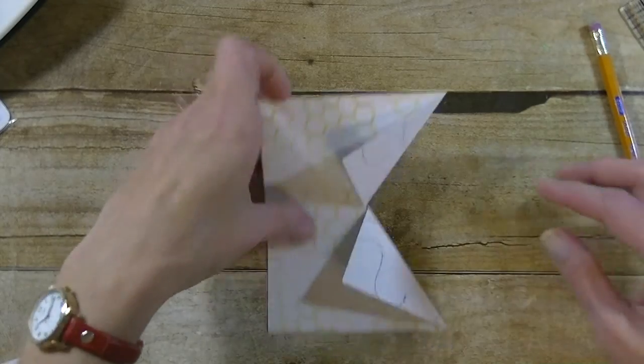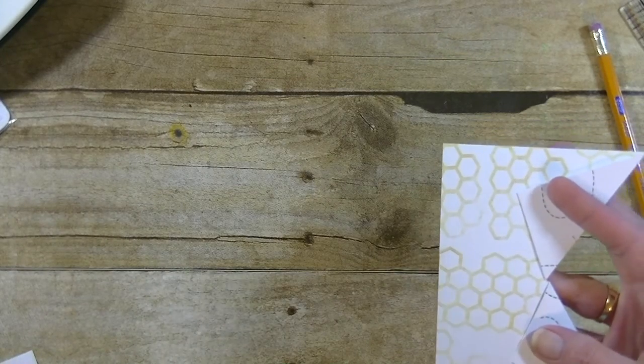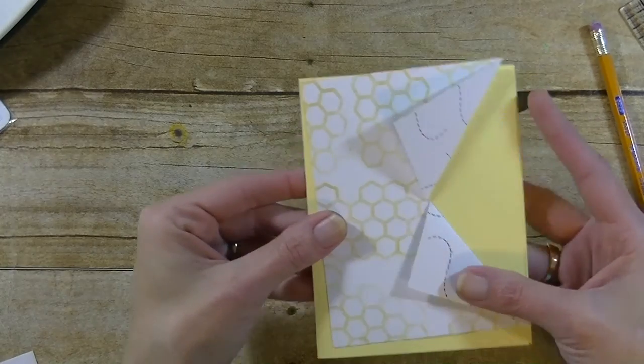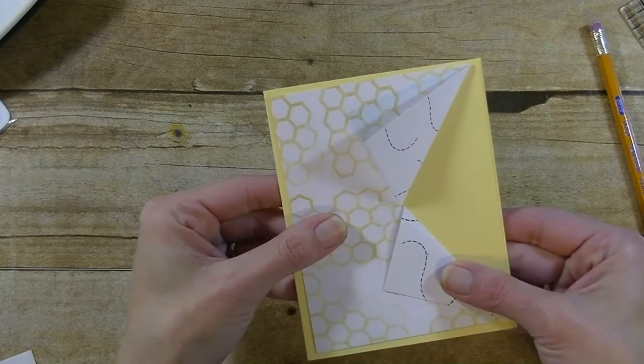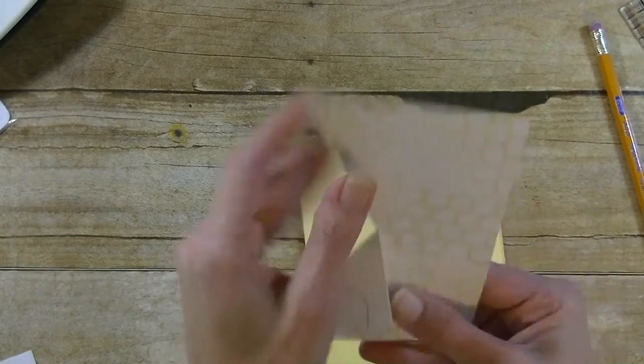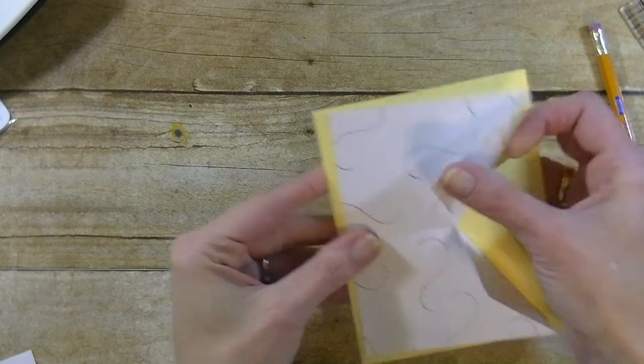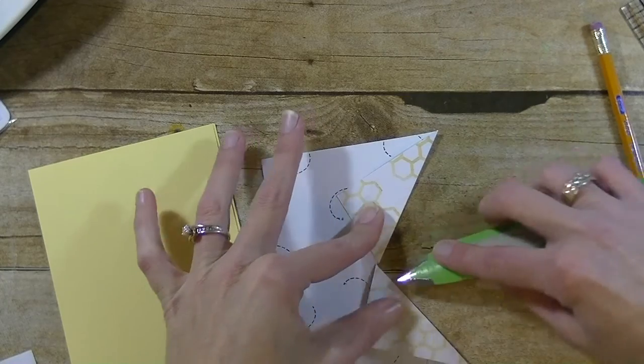I'm going to take them and fold them. Crease them with your bone folder. Now at this point, you determine what side you want to be the front of the card. Okay, I'm going to bring in our yellow background so you can see this better. So it can look like that with more of the honeycomb showing and less of the trail, or you can bring it around this way and have more of the trail showing and less of the honeycomb. I'm going to go that side. Okay, so I'm going to go ahead and give this one a crease here.